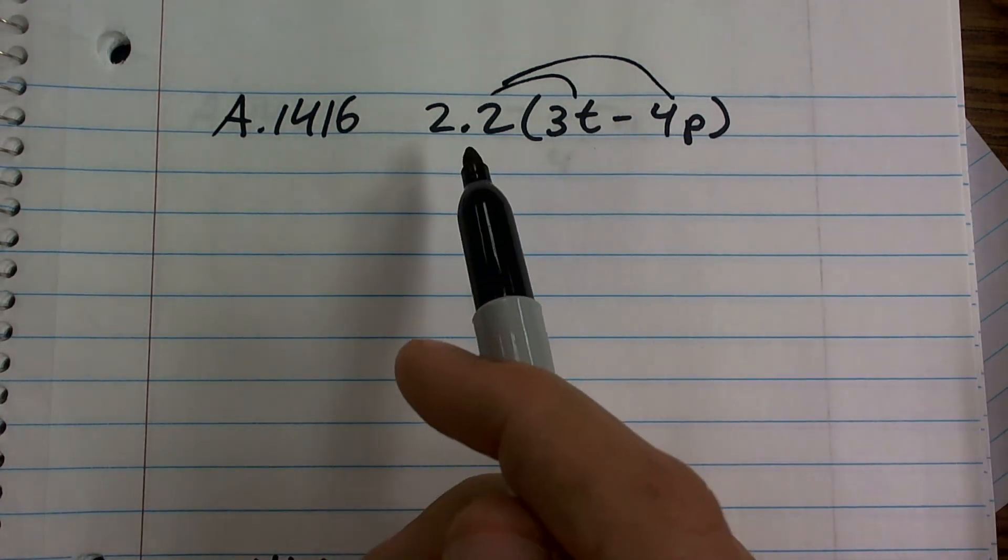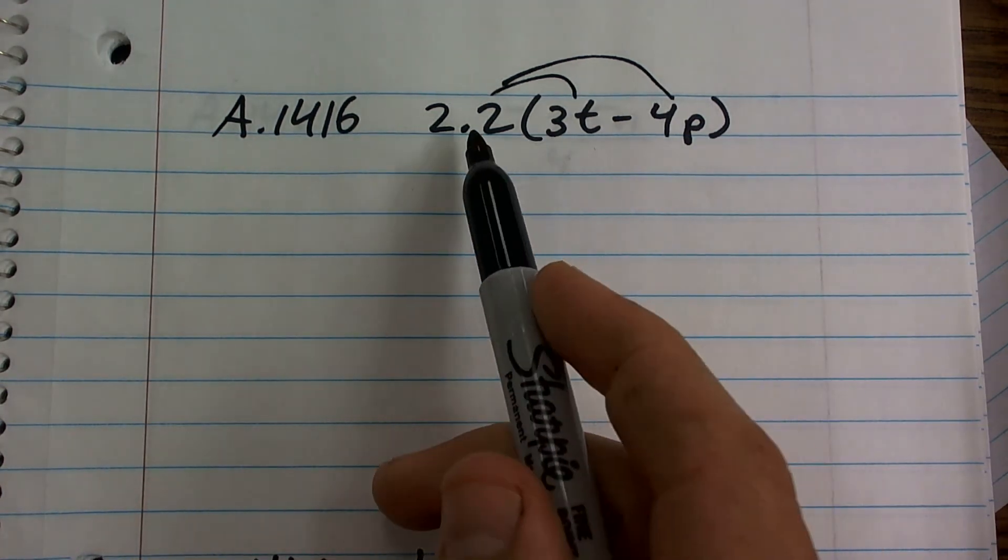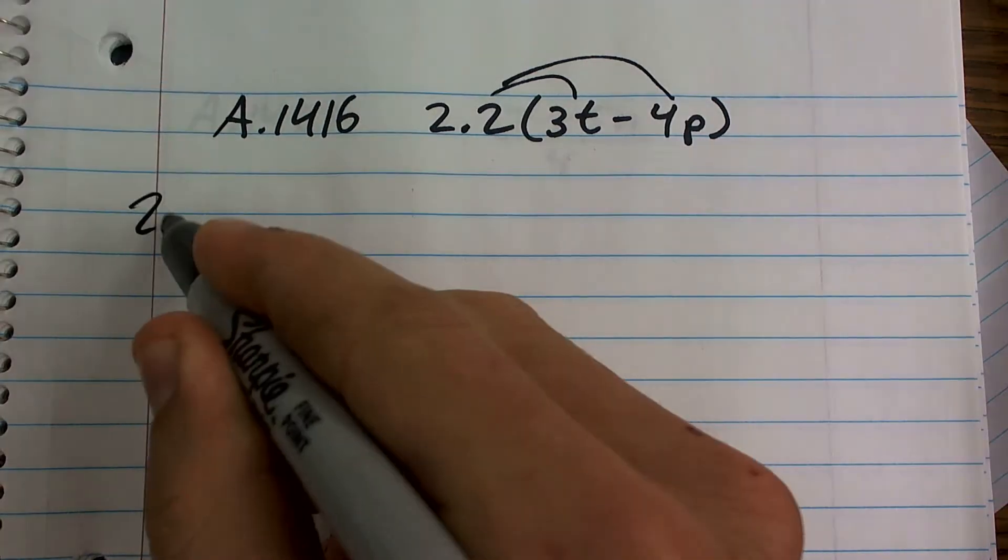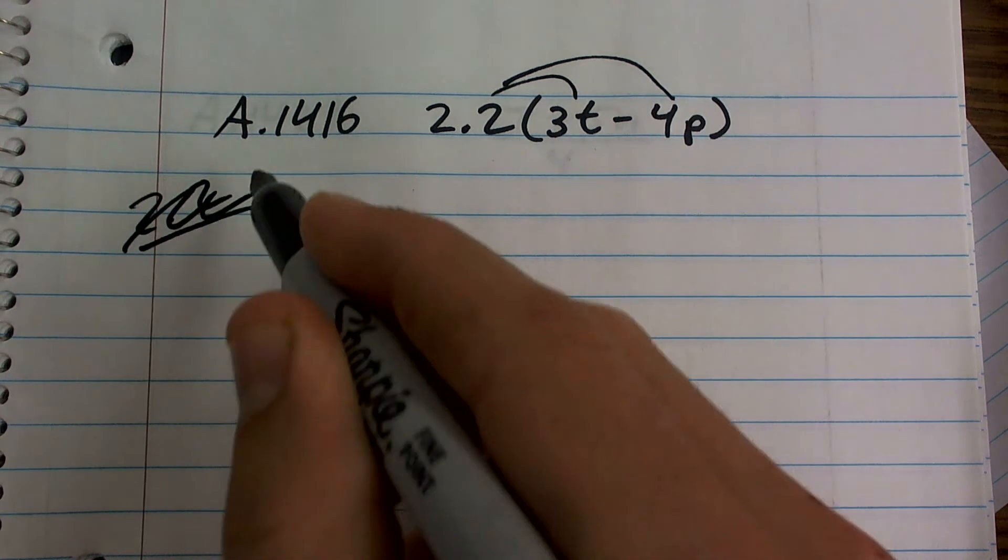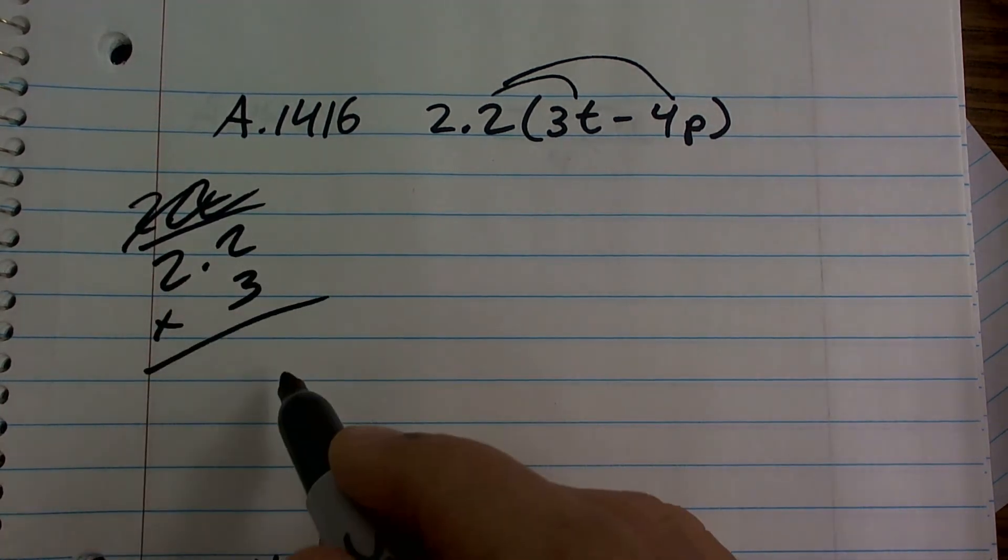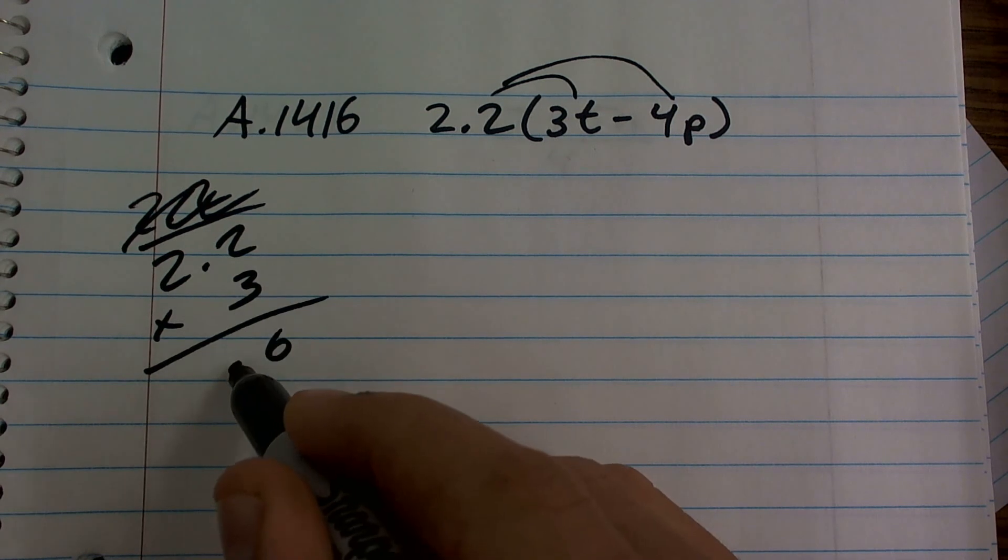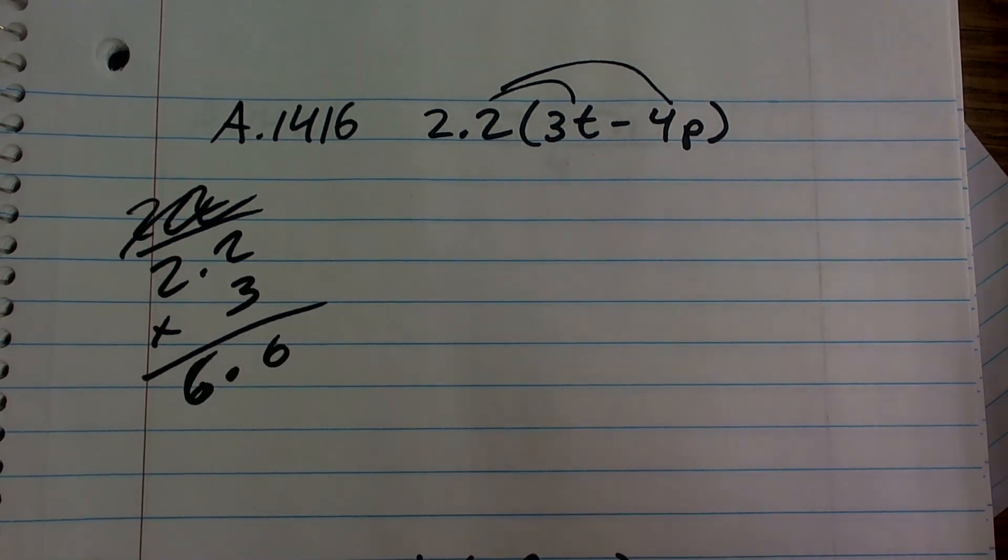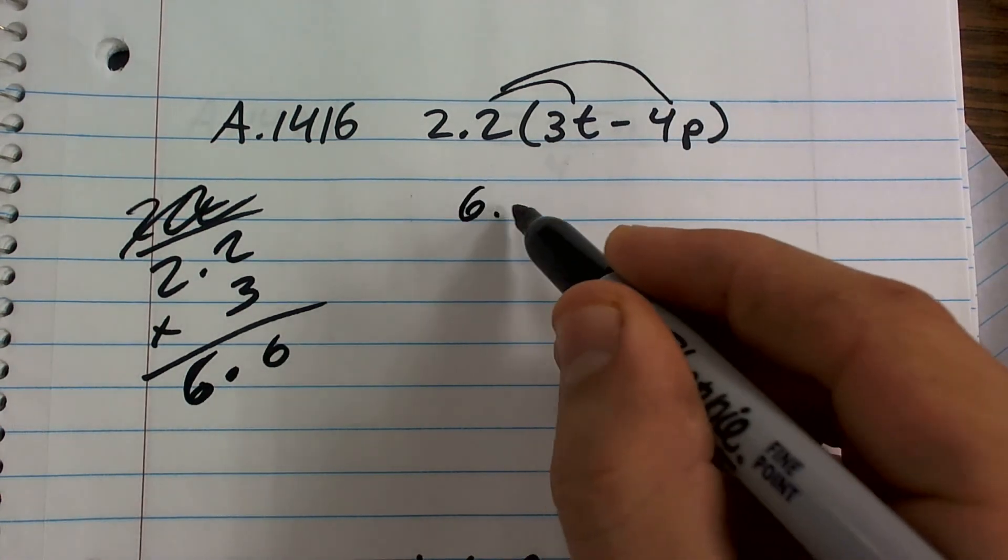So I know I have a decimal here, but we're just going to treat it just like an integer. Multiply 2.2 times 3. If you can't do it in your head, you can do it on a sheet of paper. 2.2 times 3 - multiply, you get 6. Keep the decimal point. 6.6. So you can do 6.6, or you can also plug it in your calculator if you are in absolute need.